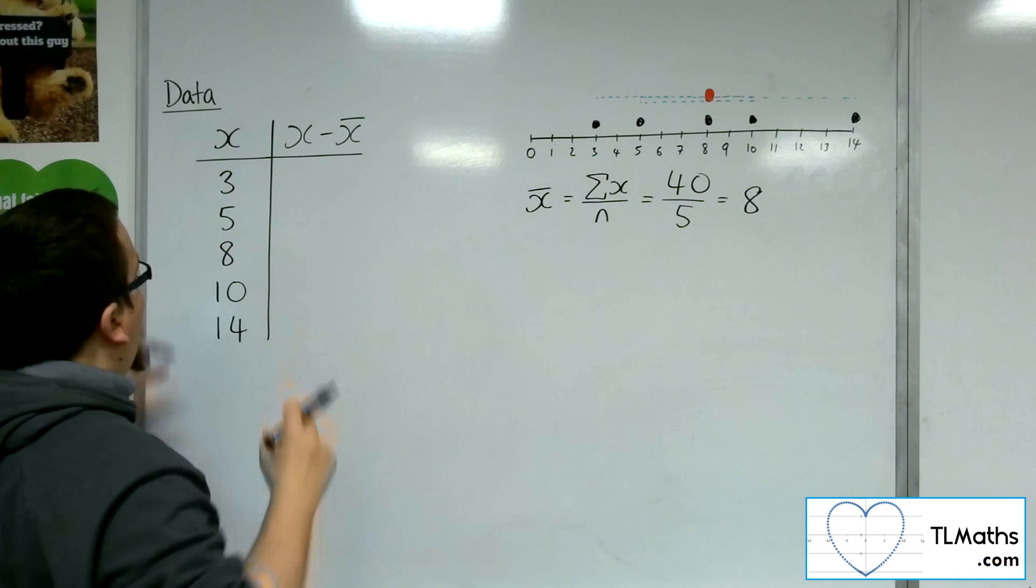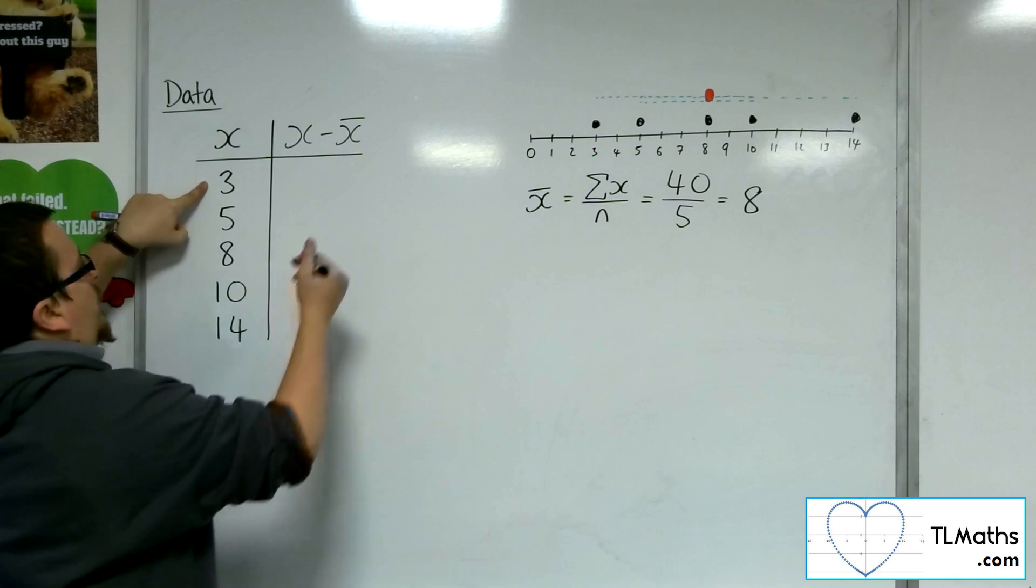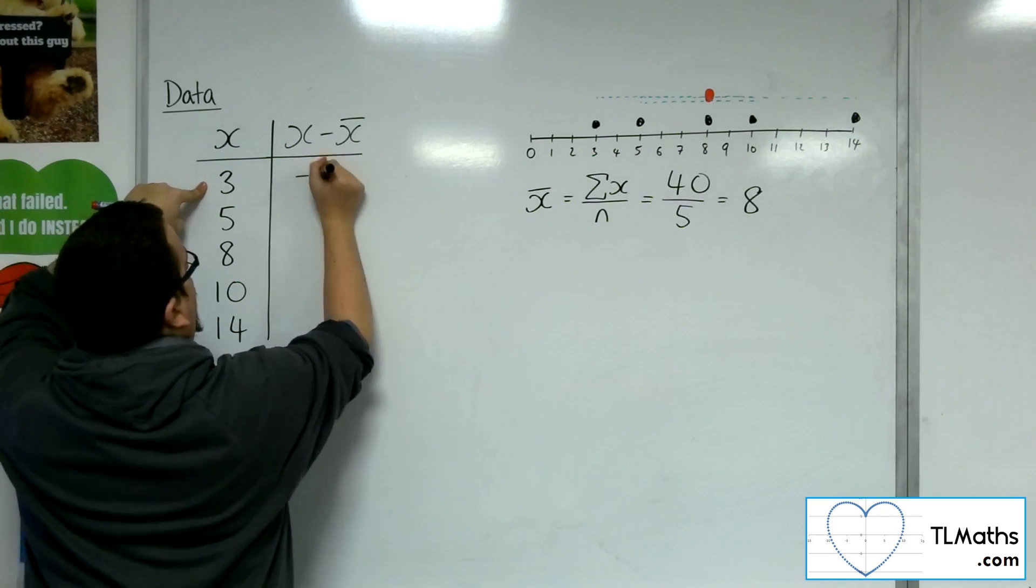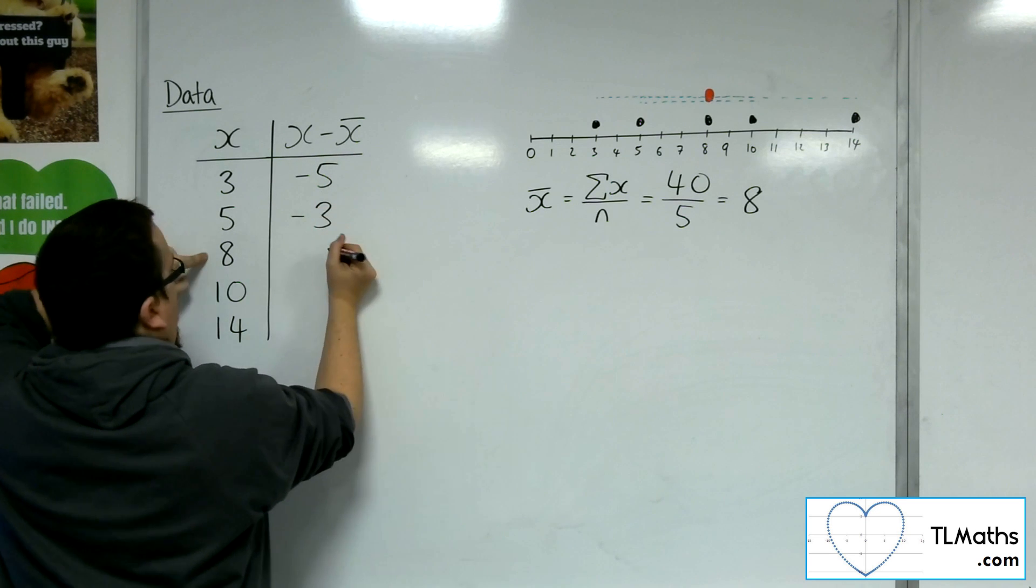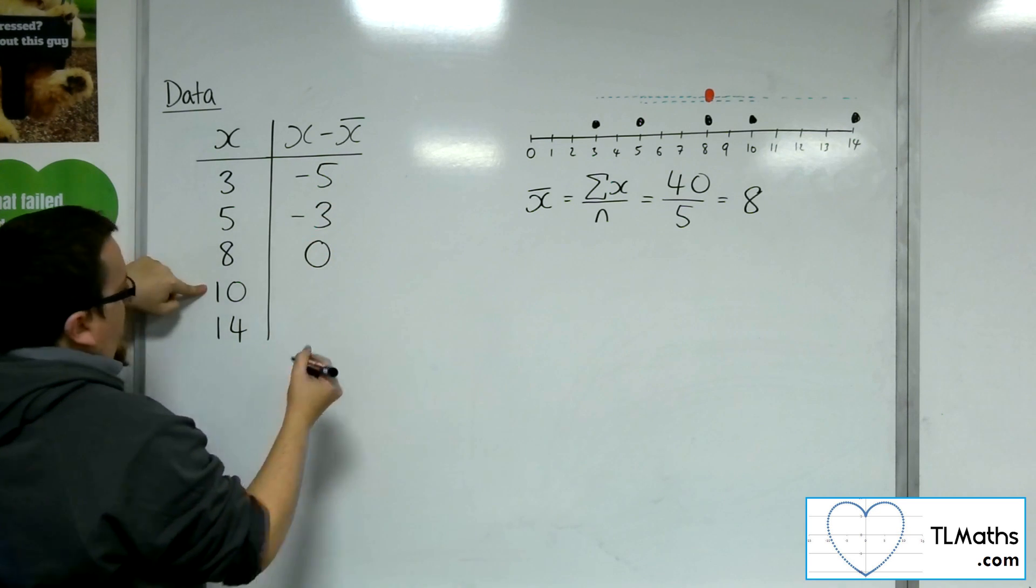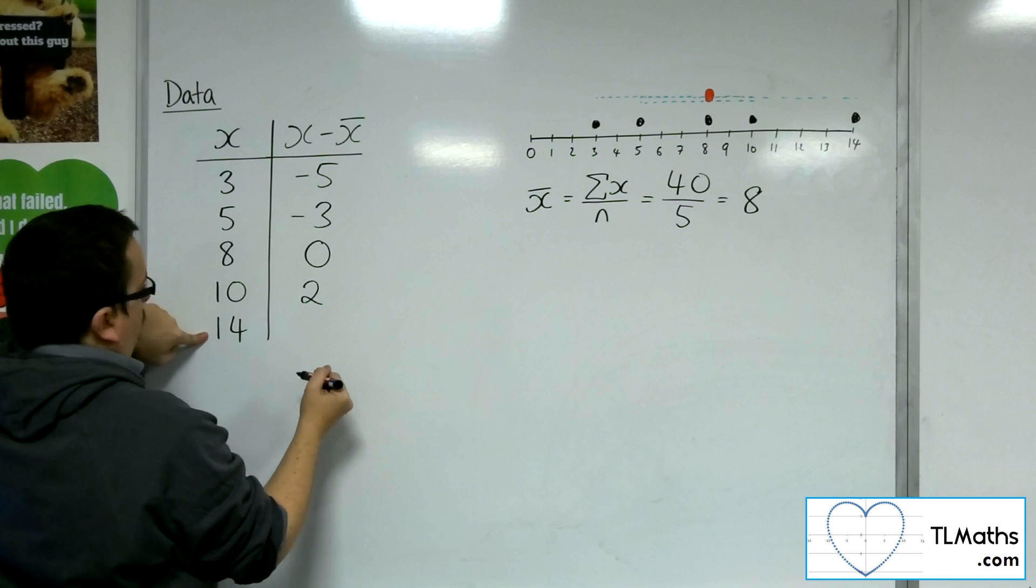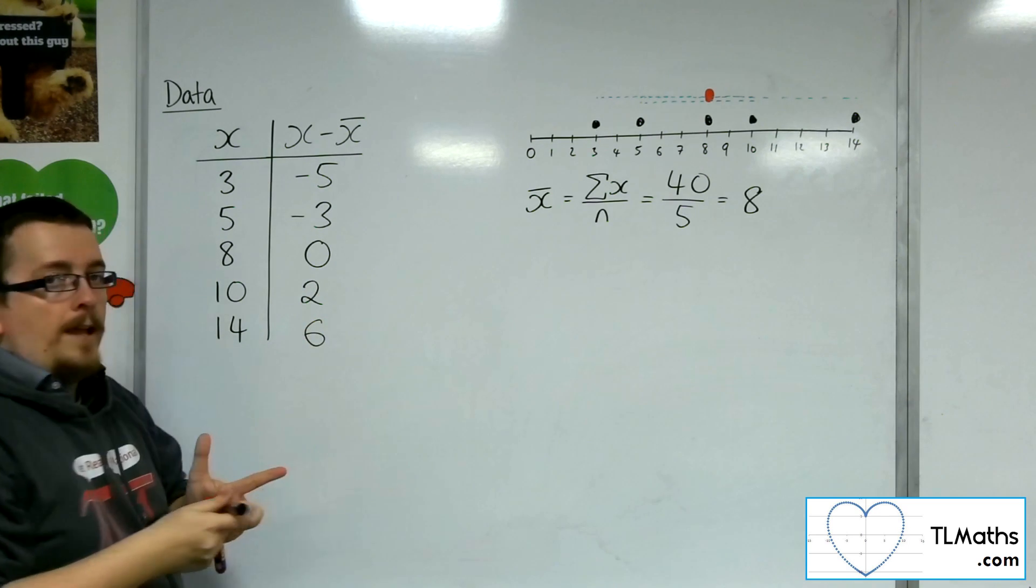So I want to subtract 8 from each of these. So 3 take away 8 is minus 5. 5 take away 8 is minus 3. 8 take away 8 is 0. 10 take away 8 is 2. And 14 take away 8 is 6.